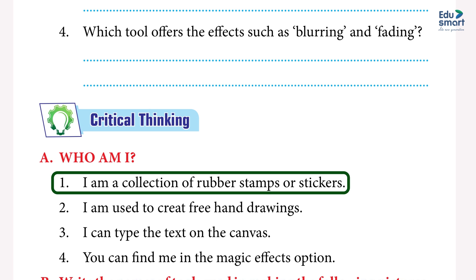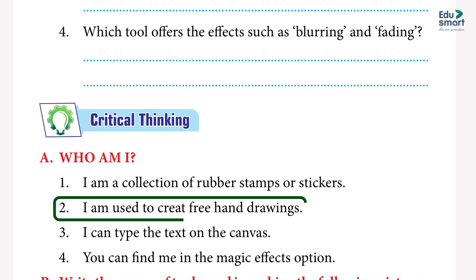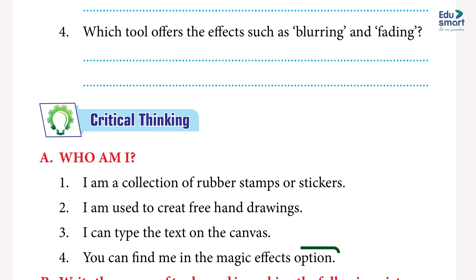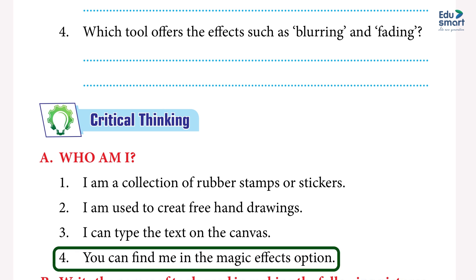Critical thinking — Who am I? 1. I am a collection of rubber stamps or stickers — answer: Stamp tool. 2. I am used to create freehand drawings — answer: Paint tool. 3. I can type text on the canvas — answer: Text tool. 4. You can find me in the Magic effects option — answer: Fill tool.